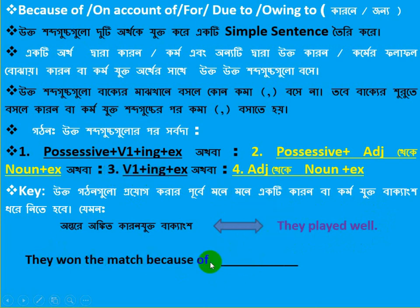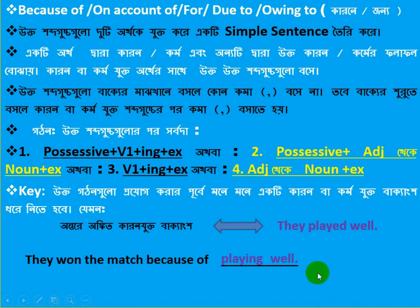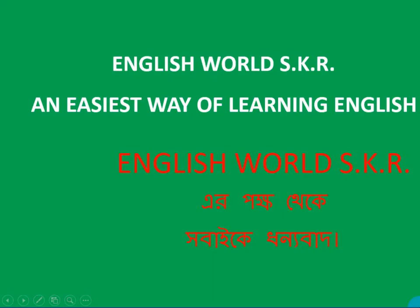In the incomplete sentence, we will complete it. V1 — play, play, playing — extension. My dear learners, I think now you are able to gather knowledge of how to complete an incomplete sentence based on because of, on account of, for, due to, and owing to. Thank you for watching this video.